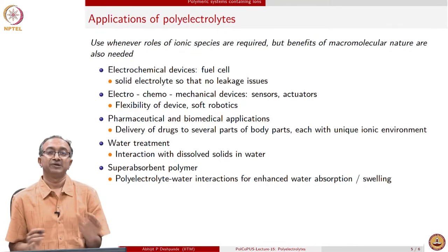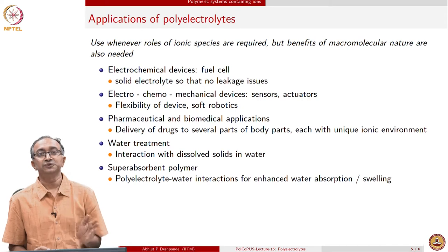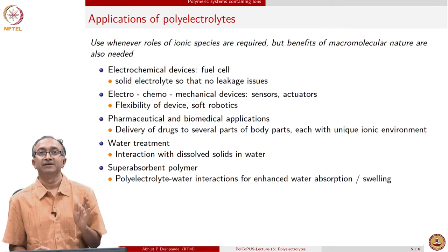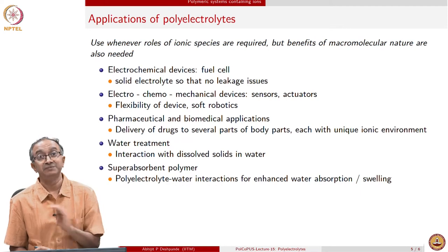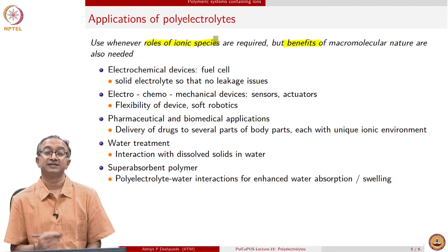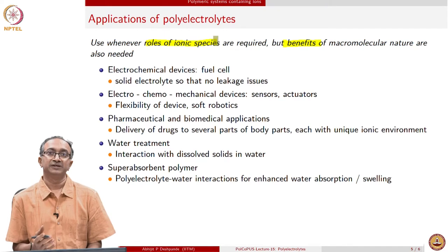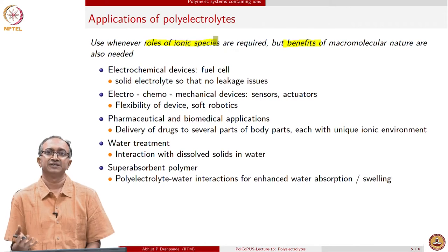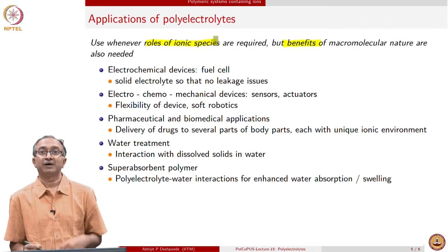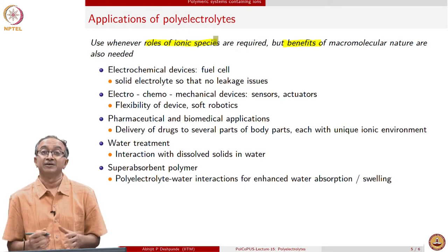Looking at where polyelectrolytes are used: we use polyelectrolytic systems or macromolecular systems with ionic groups wherever we need ionic species but also want the benefits of macromolecules. What are these benefits? We need ionic species conduction, but at the same time we need benefits such as solid-like systems — no leakage and none of the corrosion issues associated with liquid systems. With a macromolecular system we can bring additional benefits in terms of flexibility and ease of fabricating various shapes.